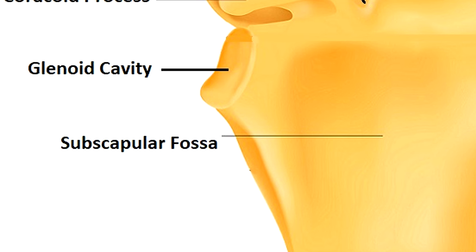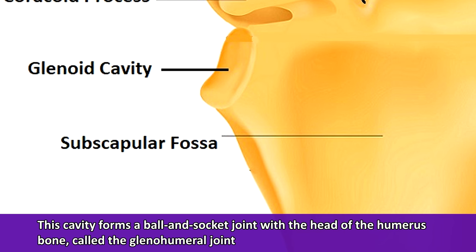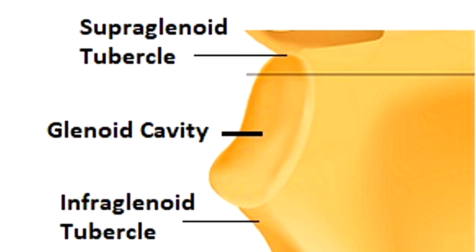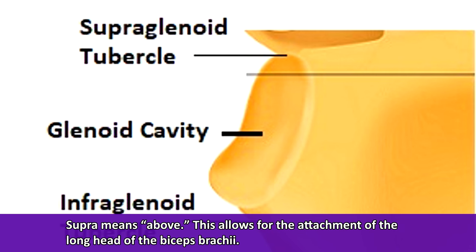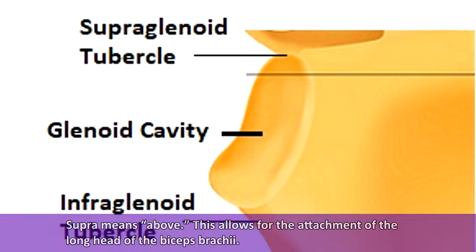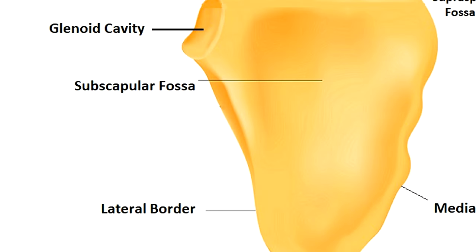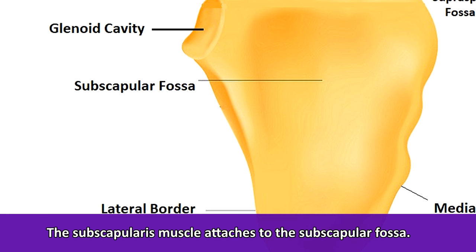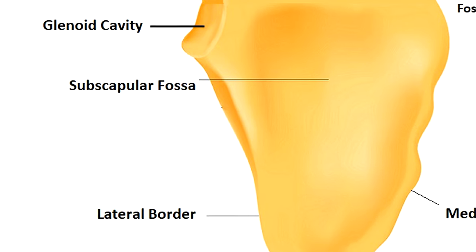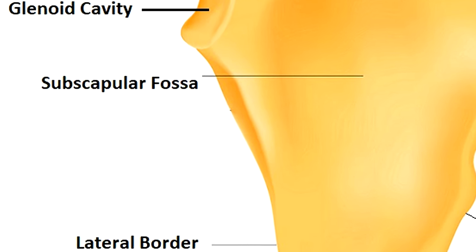Looking at the lateral part of the scapula, you'll notice a rounded depression closer to the top called the glenoid cavity. This cavity forms a ball-and-socket joint with the head of the humerus called the glenohumeral joint. Above and below the glenoid cavity are two little bumps called tubercles. The supraglenoid tubercle — 'supra' meaning above — allows for the attachment of the long head of the biceps brachii. The infraglenoid tubercle below allows for the attachment of the long head of the triceps brachii. On the front side of the scapula, there is also a minor depression called the subscapular fossa, which allows the subscapularis muscle to attach. It is the only fossa on the anterior side, but one of three fossae on the scapula.